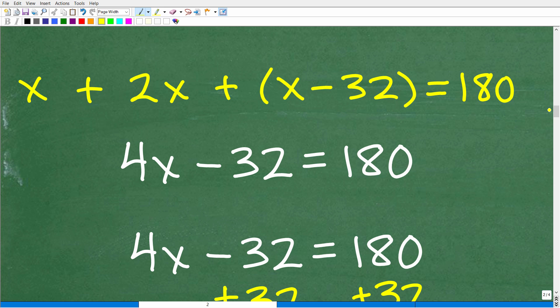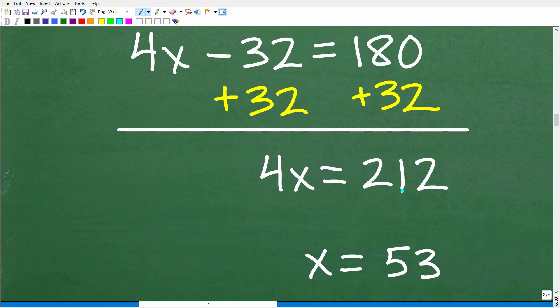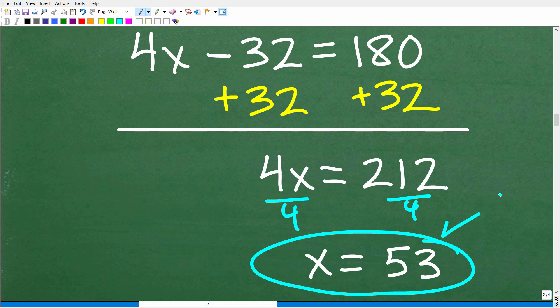Okay. So now we took this geometry problem and we turned it into an algebra problem, more or less, right? So here's our equation. So let's go ahead and solve for X. This is not that difficult. So what we need to do first is add like terms. We have X, 2X, and X. So this is going to be 4X minus 32 is equal to 180. And now what we're going to do is add 32 to both sides of the equation. So we have to add 32 to both sides. And we're going to end up with 4X is equal to 212. So to solve for X, all I got to do is divide both sides of the equation by 4. So X is equal to 53 degrees.